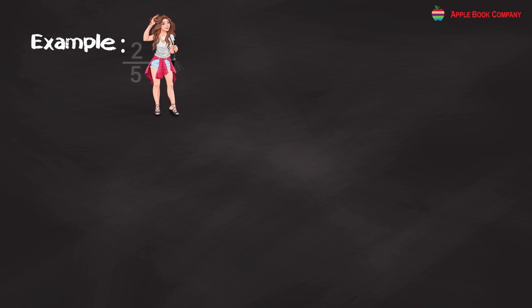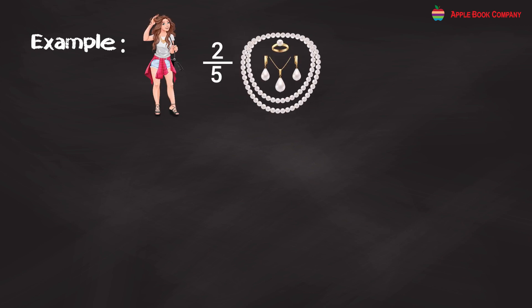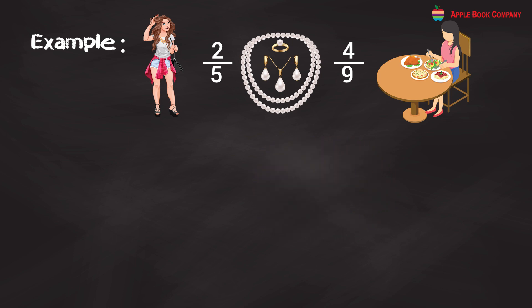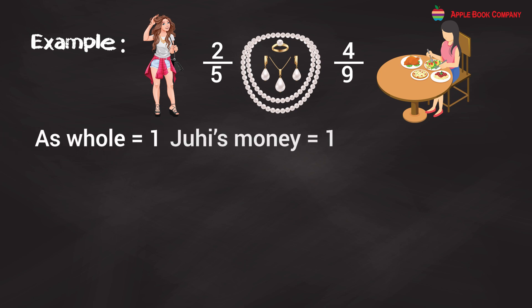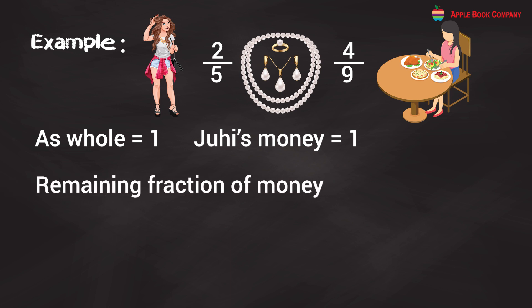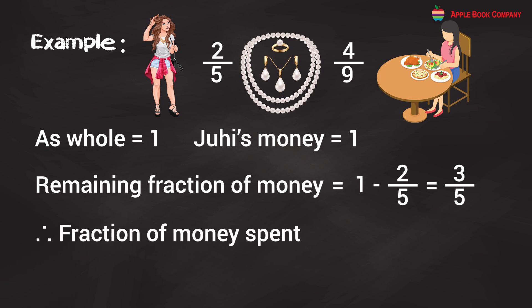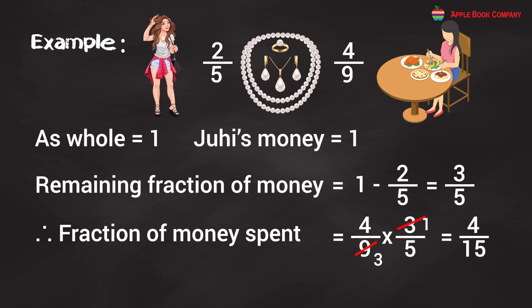Example: Juhi spends 2/5 of her money buying a necklace, then spends 4/9 of the remaining money eating out. What fraction of her money does she spend eating out? As the whole is 1, remaining money after buying the necklace = 1 − 2/5 = 3/5. Therefore, fraction spent on eating out = 4/9 × 3/5. Cancelling 3 and 9: result is 4/15. Juhi spends 4/15 of her money eating out.